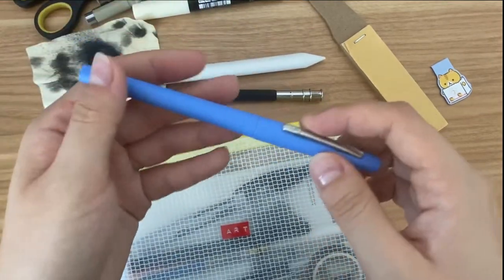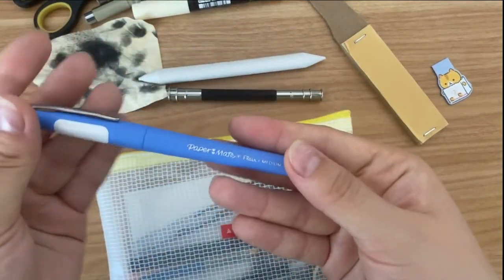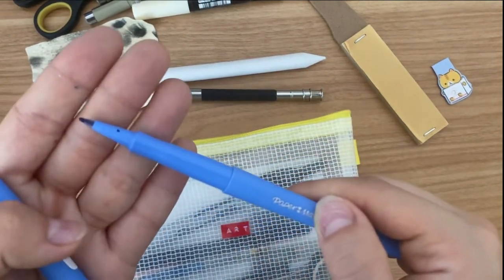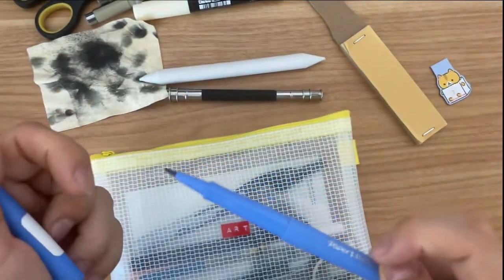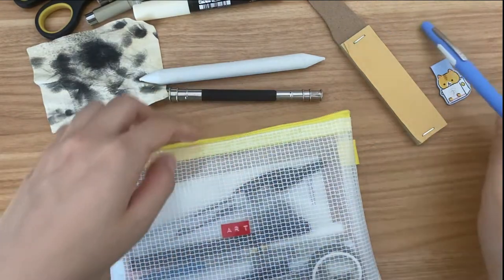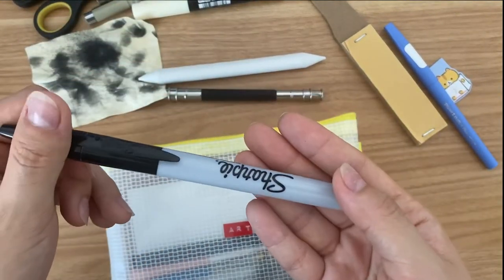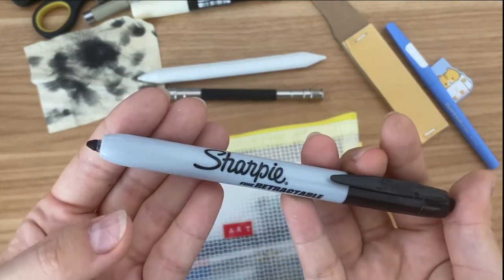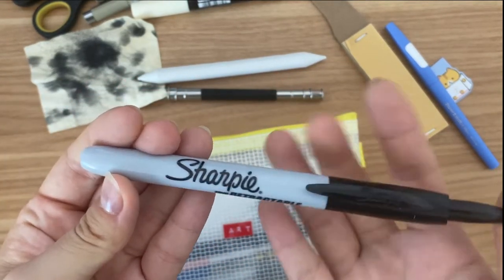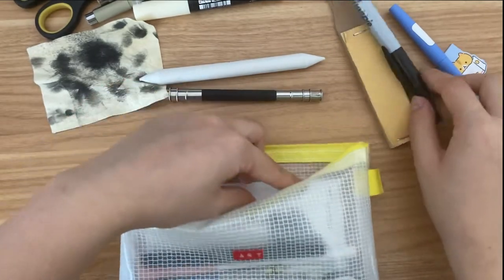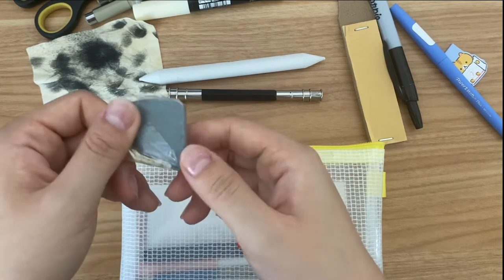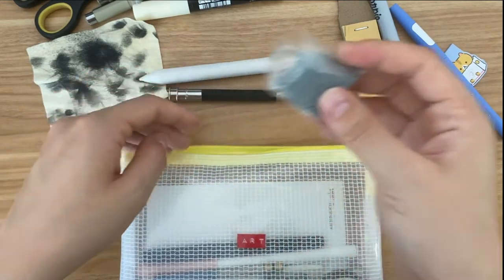I have this Paper Mate Flare pen in blue, a giant Sharpie that is clickable, I got the fancy one, and a kneading eraser also for blending, just like shading in case I went too harsh.